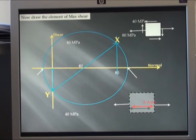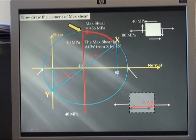Next thing I want to draw will be my element of maximum shear. Maximum shear will occur here on my circle. It is a shear value of positive 56. X and Y axis. To get to my element of maximum shear, I need to go anticlockwise 45 degrees. So anticlockwise, half of that.